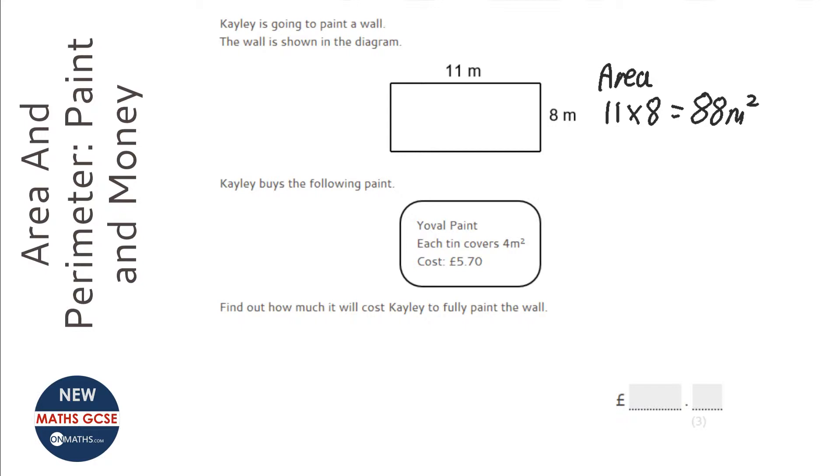So, we need to get enough paint to cover 88 metres squared. Now, it says each tin covers 4 metres squared. So, we need to work out how many tins we need. I need to do 88, which is the amount I need to cover, divided by 4. Because I know each tin will cover 4 metres squared of wall. And I've got 88 metres squared to cover.